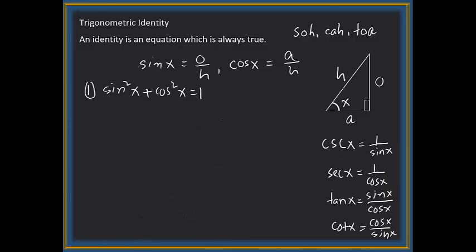We also know these relations by definition: cosecant x is 1 over sine x, secant x is 1 over cosine x, tangent x is sine x over cosine x, and cotangent x is cosine x over sine x. The tangent and cotangent relation is reciprocal: tangent x is 1 over cotangent x, or cotangent x is 1 over tangent x.